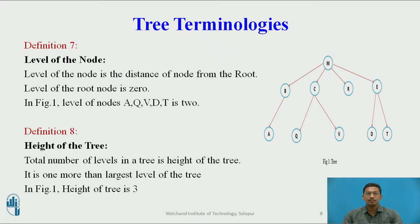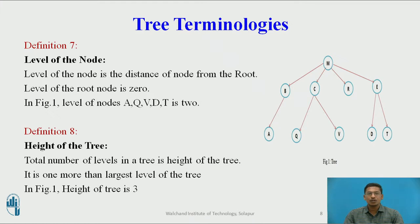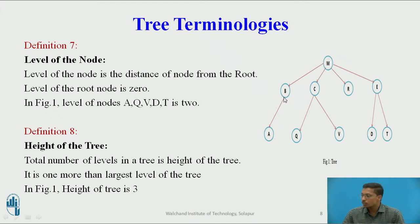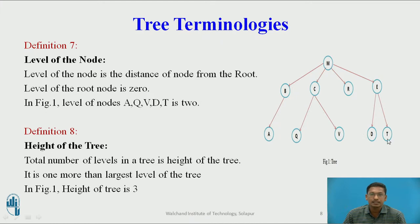Next is the level of a node and the height of the tree. The level of a node is the distance of a node from the root — that is, the distance from the root to a particular node. The level of the root node is 0, so the level of M is 0. Nodes B, C, R, and E are at level 1, and nodes A, Q, V, D, and T are at level 2.